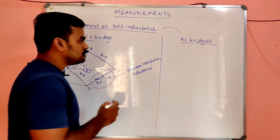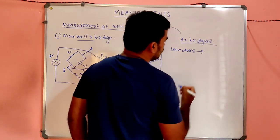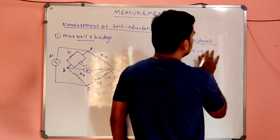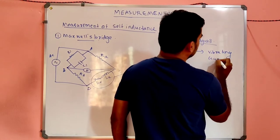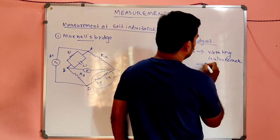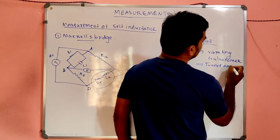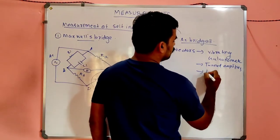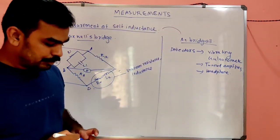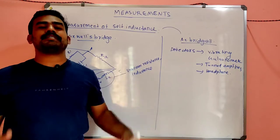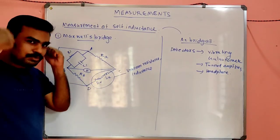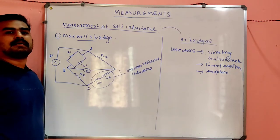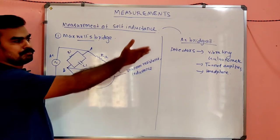In AC bridges, since the signal contains frequency components, we do not use galvanometers. Instead we use detectors. Detectors may be a vibrating galvanometer, tuned amplifier, or a headphone. In the laboratory you wore a headphone and measured inductance. When the bridge is balanced, the sound in the headphone becomes null. Normally we use a headphone as a detector.